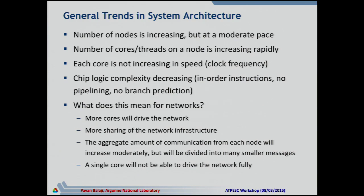The number of nodes is increasing at a moderate pace — about 2x. The number of cores or threads per node is increasing rapidly, which means you have a bunch of nodes with lots of cores driving a network. Each core is not increasing in speed — clock frequency has stagnated — and probably the most controversial trend is that chip logic complexity is actually decreasing: out-of-order instructions are being removed, replaced with in-order capabilities, and reduced pipelining.